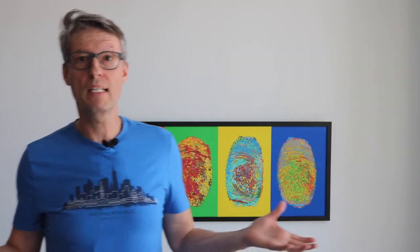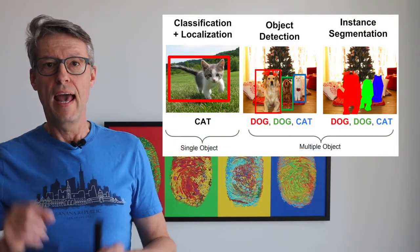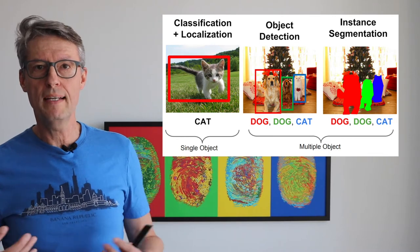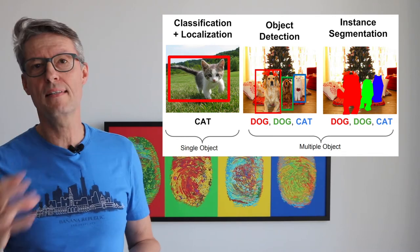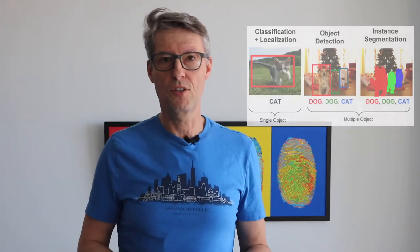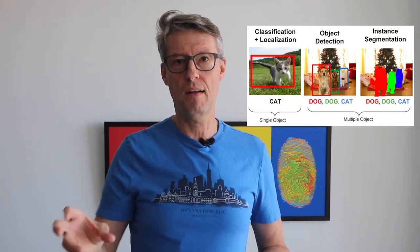Or, if we have more than one object in a picture, we can detect all the objects — object detection — and put boxes around the objects to really understand where each object is in the picture. Or we can do instance segmentation, coloring the pixels where the objects are.